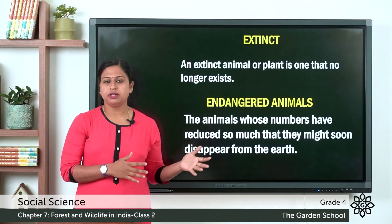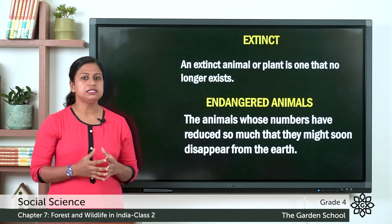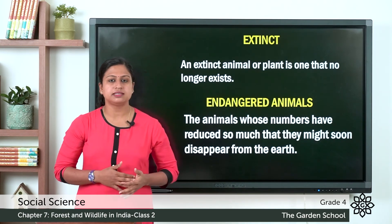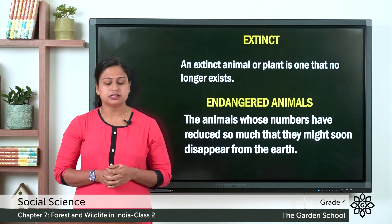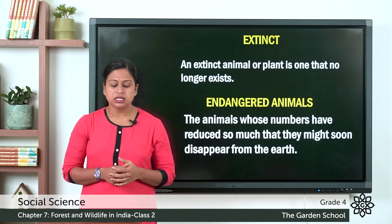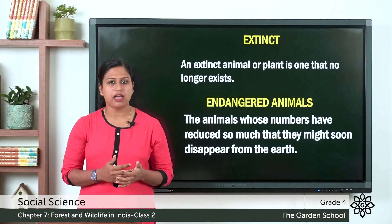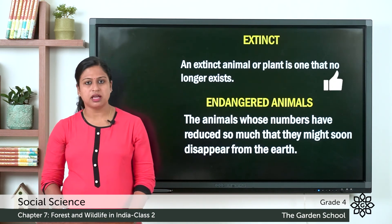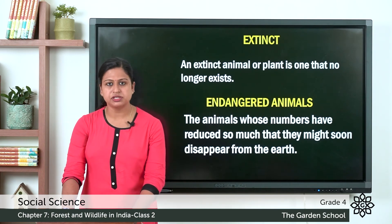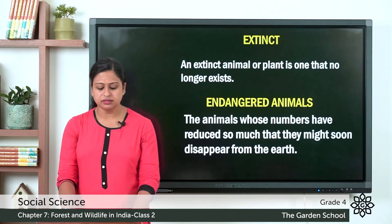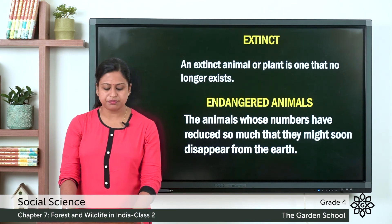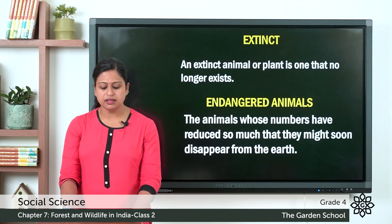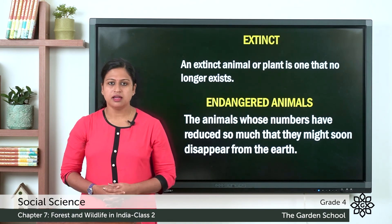In order to protect wildlife our government has declared some areas as protected areas. These are known as national parks or sanctuaries. Here the cutting down of trees or killing of animals are illegal. Some of the well-known national parks and sanctuaries are Corbett National Park in Uttarakhand, Jaldapara National Park in West Bengal, Periyar National Park and Tiger Reserves in Kerala, and Sariska in Rajasthan.